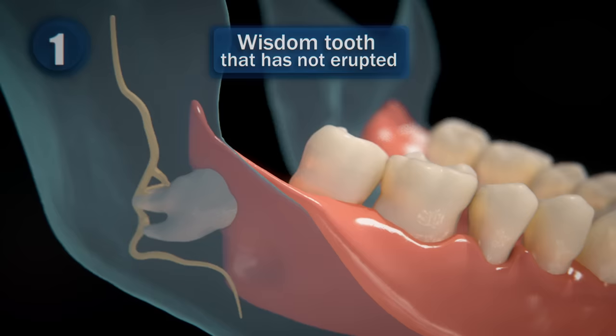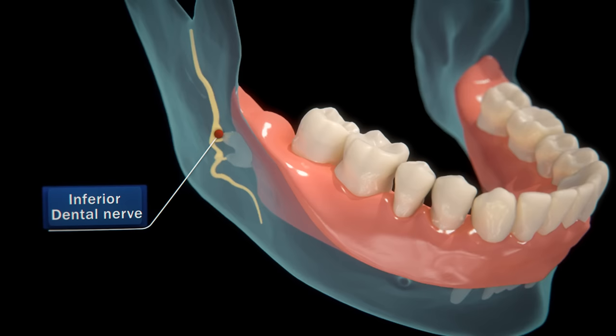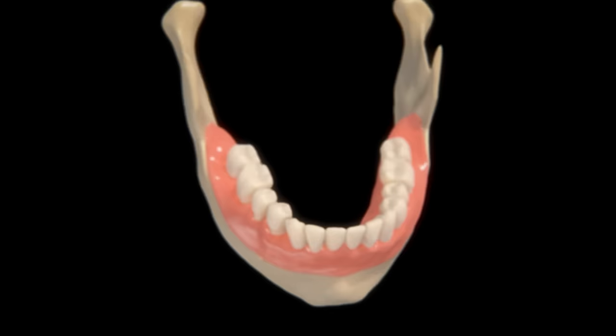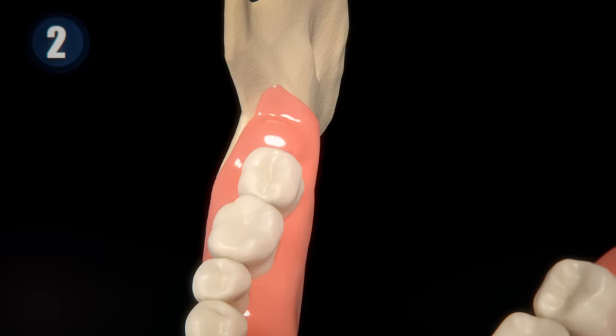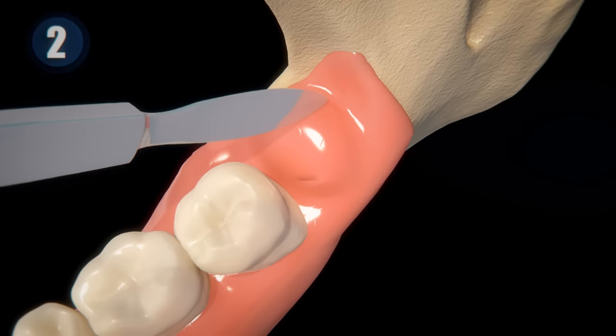To extract a wisdom tooth that has not erupted, the dentist will perform a nerve block technique to the inferior dental nerve in the area where the anesthetic will be applied. After one minute, when it has taken effect, the expert will proceed to anesthetize around the tooth with the help of an injection. Once it has been verified that the area is completely numb, a small incision will be made in the gum tissue to expose the bone that covers it and visualize the wisdom tooth.